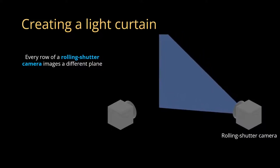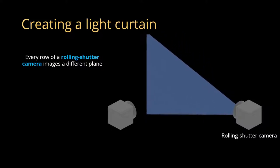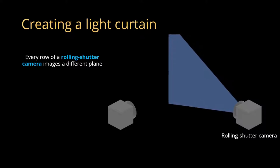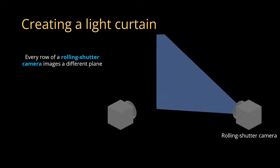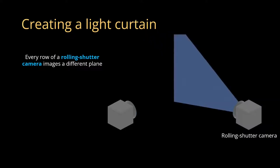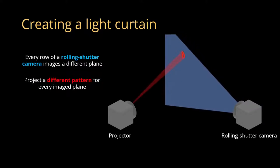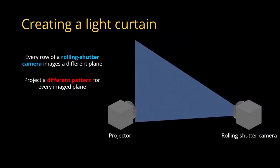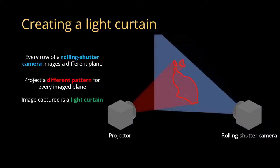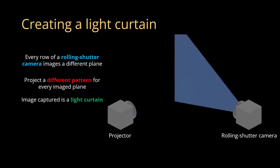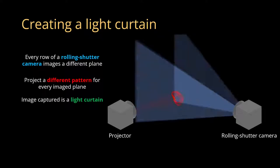Such a setup can be created by using a rolling shutter camera combined with some sort of light projection system. Every row of a rolling shutter camera captures a different slice of the scene at a different time. If we synchronize a projector with this camera, we can illuminate a different pattern for each individual row of the rolling shutter. It is this spatiotemporally varying illumination that forms the light curtain.